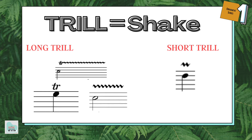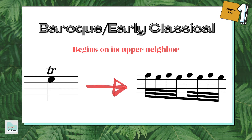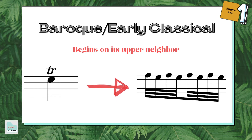In the Baroque and Classical eras, the way that we play the trill is to start with its upper auxiliary note. So in this example, in treble clef, if the note is an E, that means we should start on the F and alternate between F and E back and forth — again, a minimum of four notes.